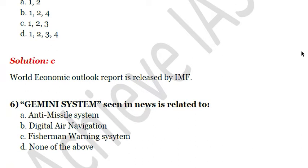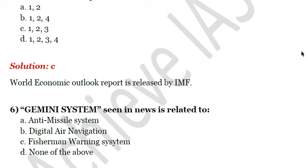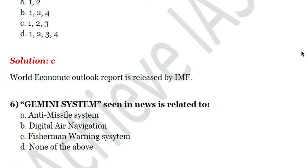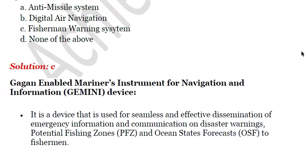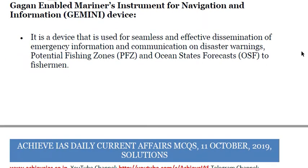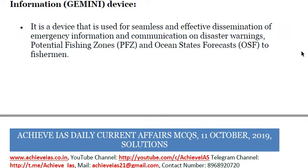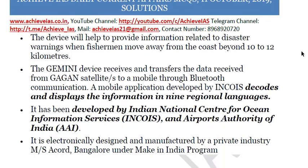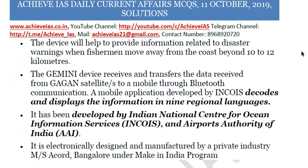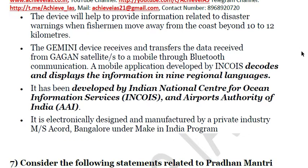The sixth question: 'GEMINI system seen in news is related to' — A: Antimissile system, B: Digital air navigation, C: Fisherman warning system, D: None of the above. The answer is C — Fisherman warning system. GEMINI stands for Gagan Enabled Mariner's Instrument for Navigation and Information device. It aims to notify fishermen engaged in fishing beyond the coastline and warn them of any impending disaster or possible risks. It is used for seamless and effective dissemination of emergency information, disaster warnings, potential fishing zones, and ocean state forecasts. It is registered by the GAGAN satellite and has been developed by the Indian National Centre for Ocean and Information Services and the Airports Authority of India.